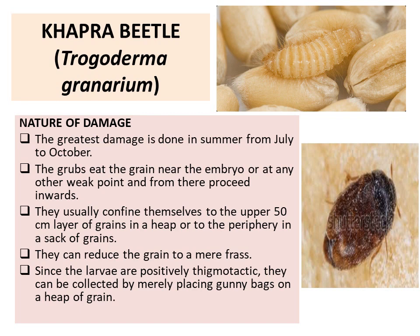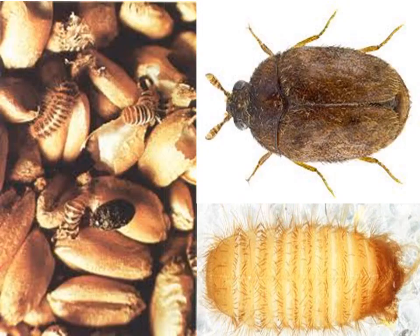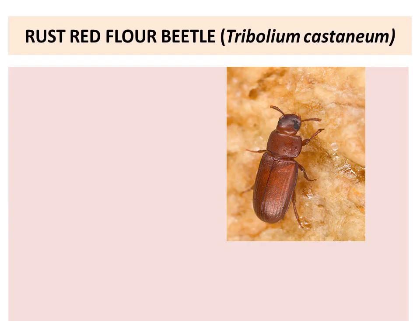Now look at the picture. Fine hairs are present throughout the body of the grub. The adult has clubbed antennae and three pairs of legs, and elytra are present, whereas the grubs have fine hairs.